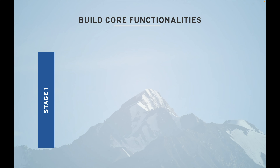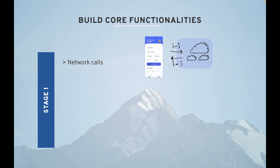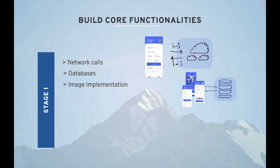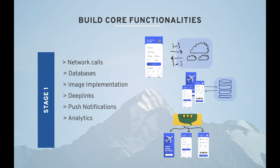Stage one is building core functionalities. Here you will build network calls, databases, image implementation, date playing, push notifications, analytics, and crash analytics. All these things are very critical and very important for an application — I call them core functionalities. If you're planning a migration, you have to build these things first.